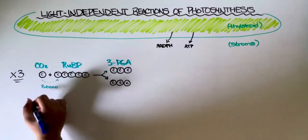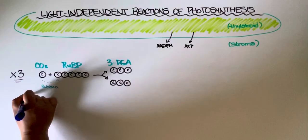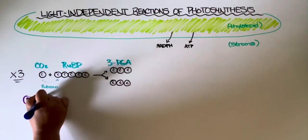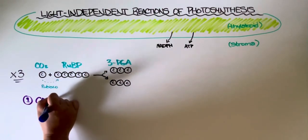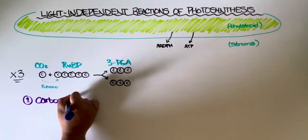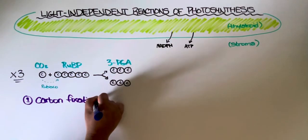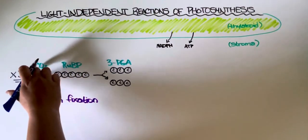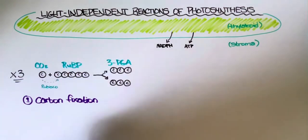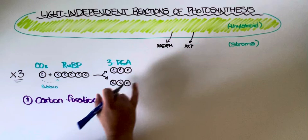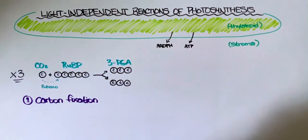So this is the first step of the light independent reactions. We call it carbon fixation, because RuBP fixes or binds to carbon dioxide and then it allows it to make these three carbon compounds.